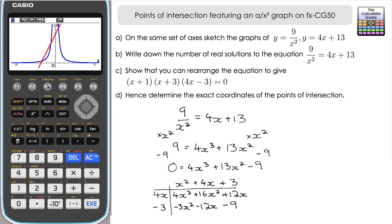The quotient is x squared plus 4x plus 3. We now factorize that — it's x plus 1 and x plus 3. We already knew that from part c, and together with the factor we divided by, 4x minus 3, we have (x plus 1)(x plus 3)(4x minus 3) equals 0. That's sufficient evidence that 9 over x squared equals 4x plus 13 rearranges to what's shown in part c.